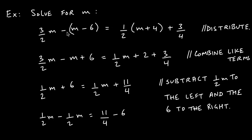Now let's look at another example with a lot of fractions: (3/2)m − (m − 6) = (1/2)(m + 4) + 3/4. We need to solve for m. The first step is to distribute to get rid of the parentheses so we have a clearer picture of what we're dealing with.